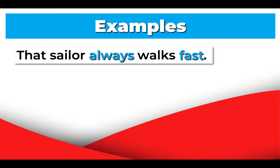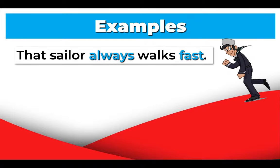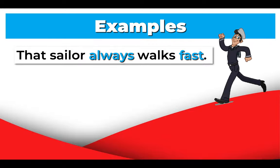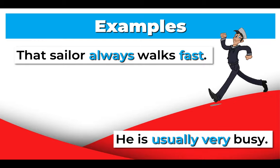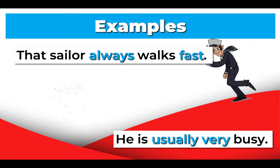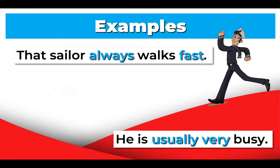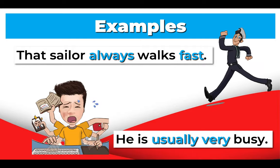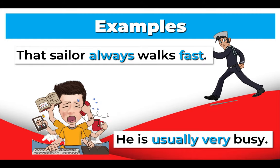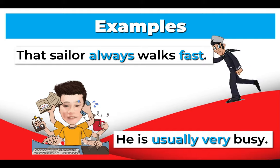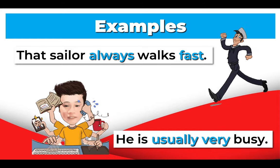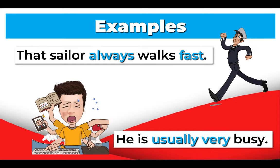Examples: That sailor always walks fast — he is walking fast. He is usually very busy. He is a really busy boy. Usually is an adverb of time. Very is an adverb modifying busy, an adjective. Always is also an adverb of time. Fast is an adverb of manner modifying walk.